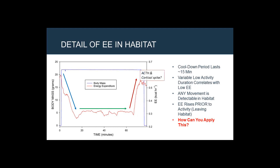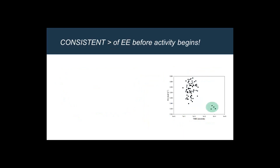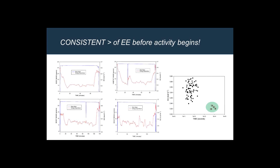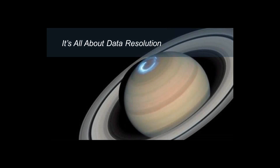We can see that entering the habitat, the animal is intending basically to sleep. It has a cool-down period that lasts about 15 minutes, then a long period of low energy expenditure, and then energy expenditure rises prior to activity. The animal grooms, as you can see from the disruption of the body mass trace, and then leaves the habitat. Looking again at those four episodes where the animal has entered the habitat for a long period of time, you can see the same pattern repeated consistently. This is something that is part of a collaboration I have with some people at UW, and could actually make a very interesting publication in its own right. This is the kind of thing you can get if you have sufficient resolution and synchronization of data.